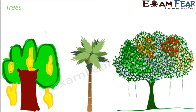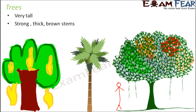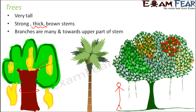Trees are huge and very tall. If you compare your height to a tree, the tree can be almost two to three times taller than you. Trees have strong, thick, brown stems — unlike shrubs, which have thin stems. The main bark of a tree is extremely thick, and even the branches coming out of it are quite thick. Branches are many and found towards the upper part of the stem. Common examples of trees are the coconut tree, banyan tree, and mango tree.